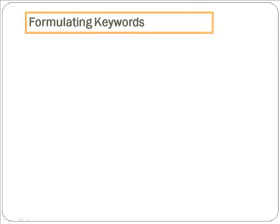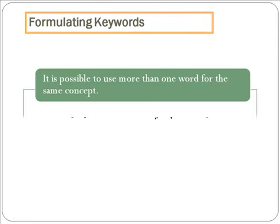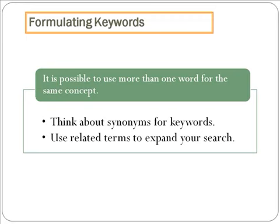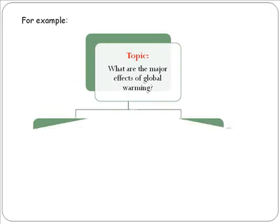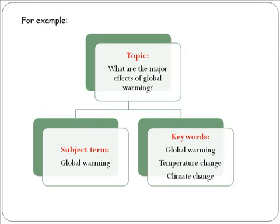Now let us think about formulating keywords for our search. Remember that it is possible to use more than one word for the same concept, so think about synonyms for keywords and use related terms to expand your search. For example, our topic is 'what are the major effects of global warming?' Our subject term is global warming, so we can use global warming, temperature change, and climate change as keywords.